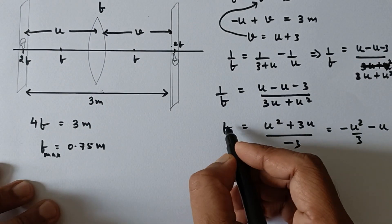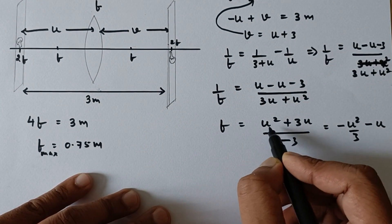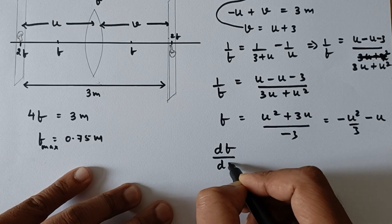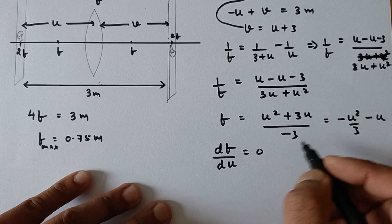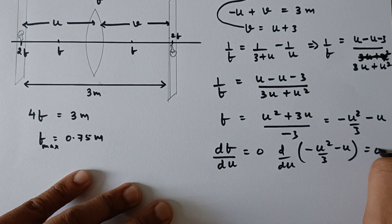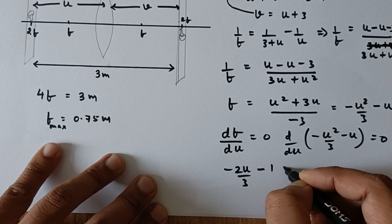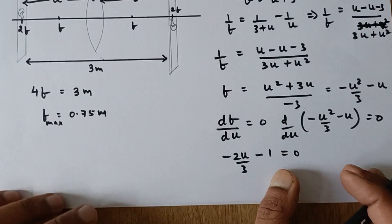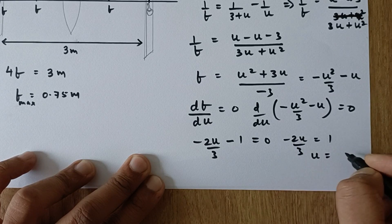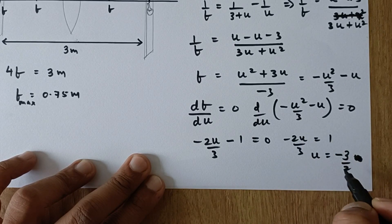Since we want f to be maximum, its first order differentiation with respect to u should be 0, because f is a function of u. So d/du of (−u²/3 − u) = 0. This gives −2u/3 − 1 = 0. Solving further, −2u/3 = 1, so u = −3/2.